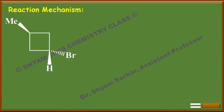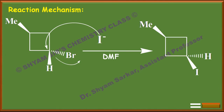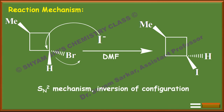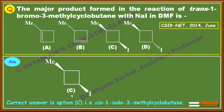In the starting substrate, I⁻ will attack from the back side and Br⁻ will leave. In DMF, SN2 is favored, so inversion occurs and you get the cis isomer. Looking at the four options given, our answer matches option C — cis-1-iodo-3-methylcyclobutane is the major product.